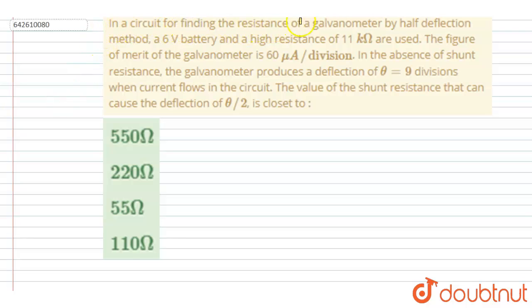In a circuit for finding the resistance of a galvanometer by half deflection method, a 6 volt battery and high resistance are used. The figure of merit of the galvanometer is 60 micro ampere per division. In the absence of shunt resistance, the galvanometer produces a deflection of theta.